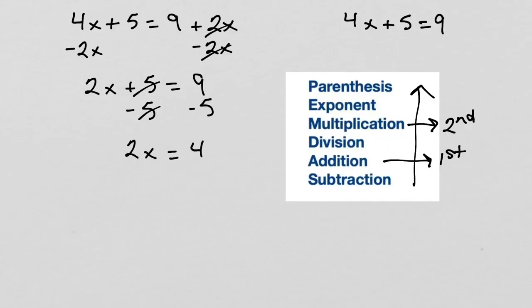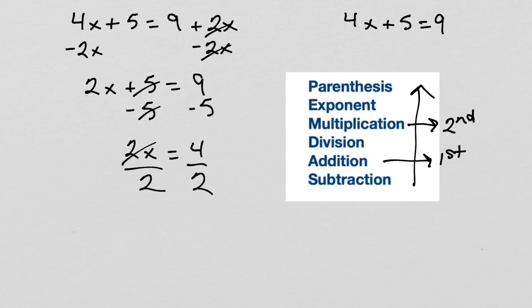We now have 2x equals 4. Next, we will get rid of the multiplication by 2. We do this by performing the opposite operation on both sides of the equation, so we will divide both sides by 2. The 2 will cancel out. 4 divided by 2 is 2. Therefore, x equals 2.